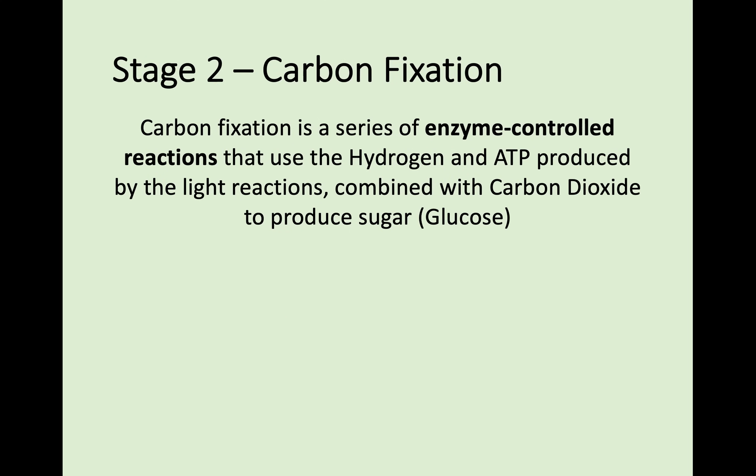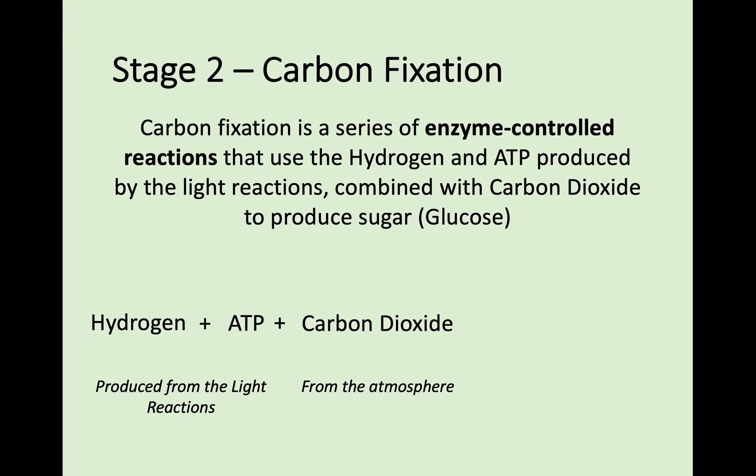In stage 2, carbon fixation, this is the series of enzyme-controlled reactions. I really stress the enzyme-controlled reactions part, because we'll talk about later in this video about how the rate of these reactions can be affected — and hopefully you remember something about enzymes from Unit 1 and how enzymes can be affected. The hydrogen and ATP from stage 1 light reactions are then combined with carbon dioxide, which is taken in from the atmosphere. So when you hear that plants breathe in carbon dioxide, this is what it's actually for. Through these reactions, the sugar is produced.